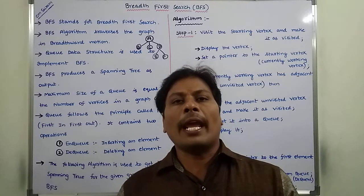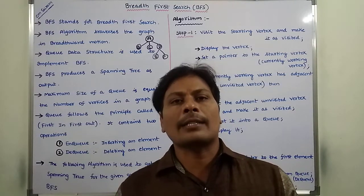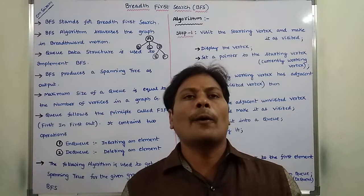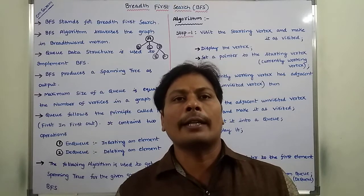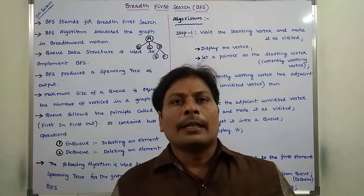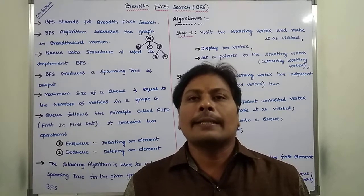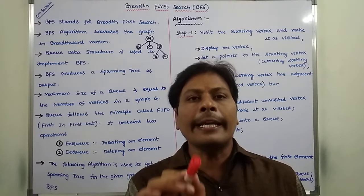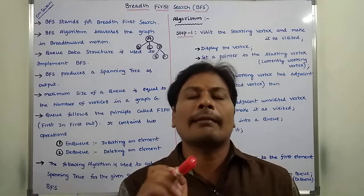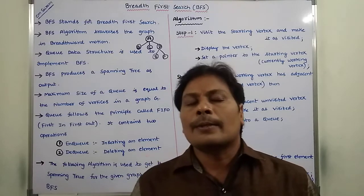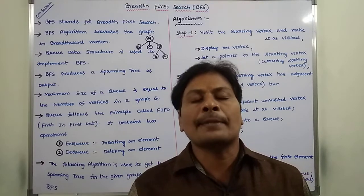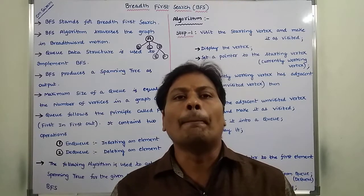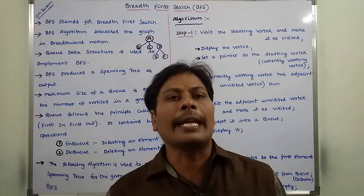Hi friends, today I am giving a lecture on graph traversal in Data Structures over our Design and Analysis of Algorithm course. Graph traversing means visiting all the vertices of a graph exactly once. There are two types of graph traversal techniques: the first one is BFS and the second one is DFS.